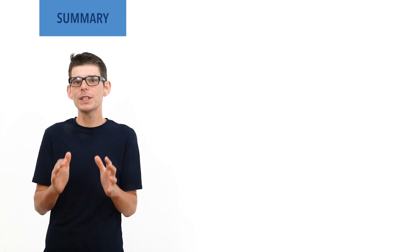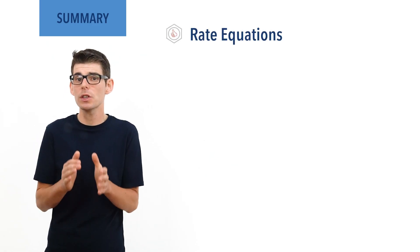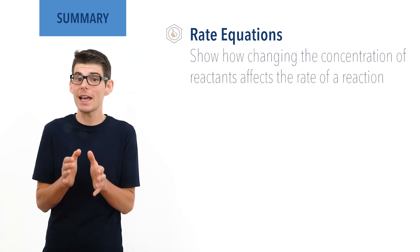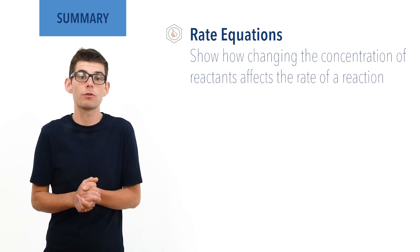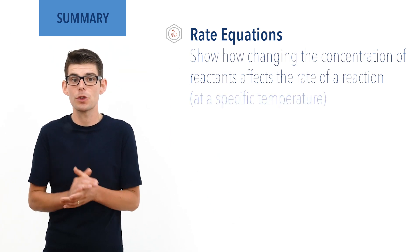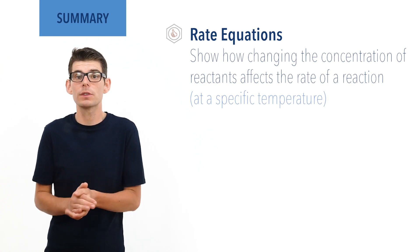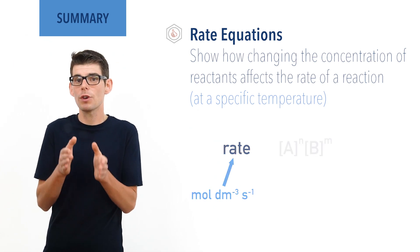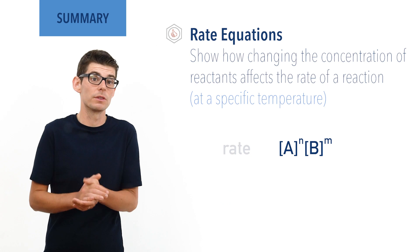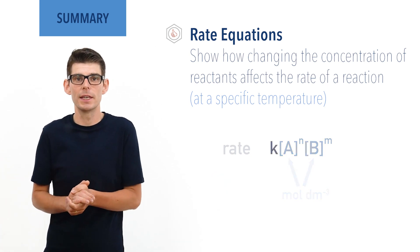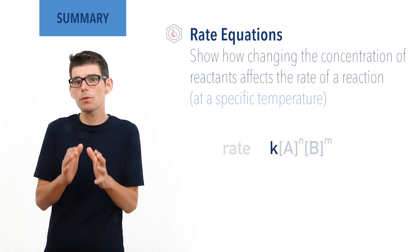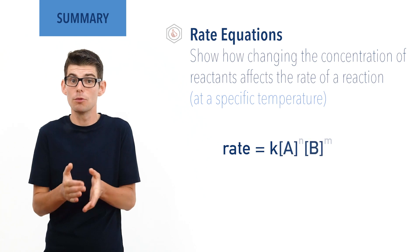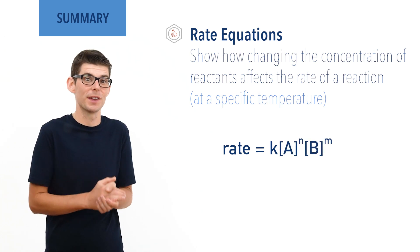So, to summarize. Rate equations show how changing the concentrations of reactants affects the rate of a reaction, and allow us to calculate the rate of a reaction based on concentrations of reactants at a specific temperature. Rate equations contain three parts: rate, with units of moles per decimetre cubed per second; concentrations of reactants raised to their orders, with units of moles per decimetre cubed; and a rate constant K. The general arrangement is: rate equals rate constant K multiplied by concentrations of reactants raised to the power of the order of reaction with respect to their concentration.